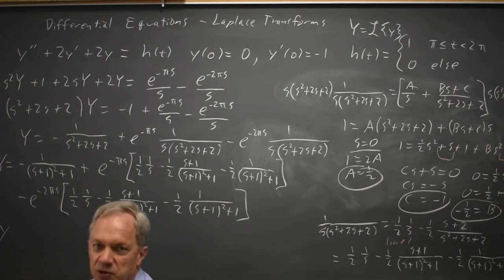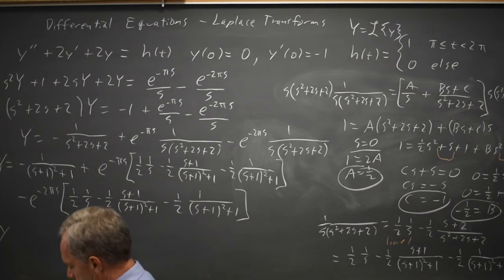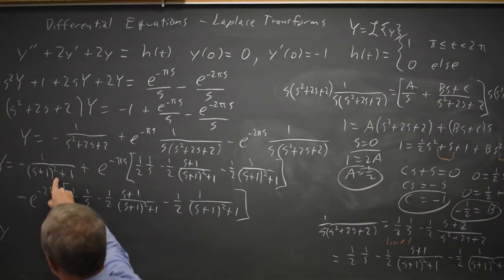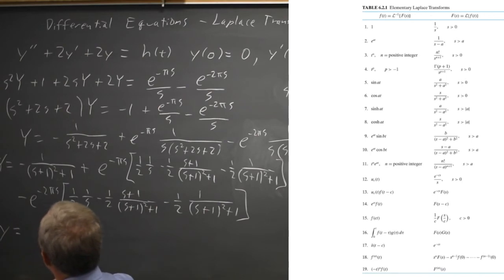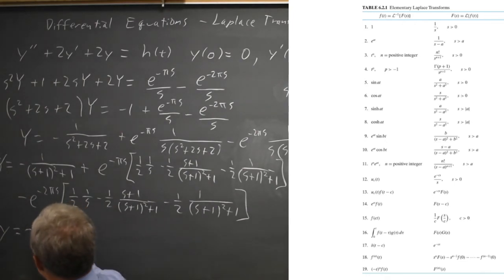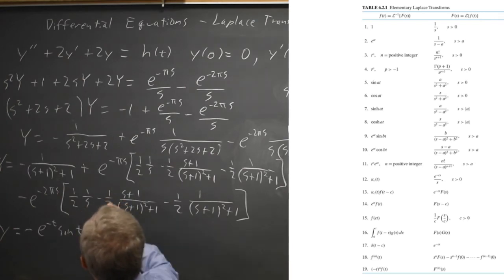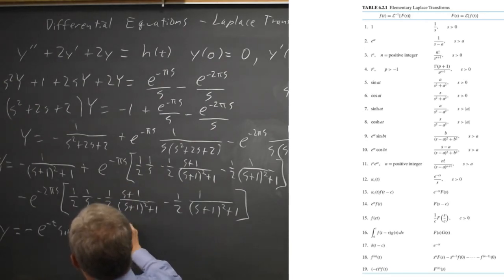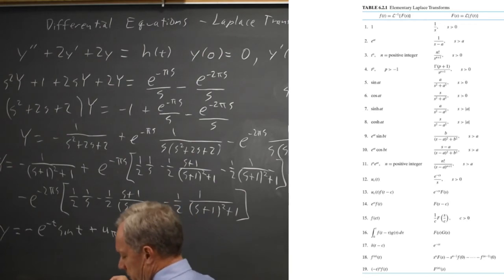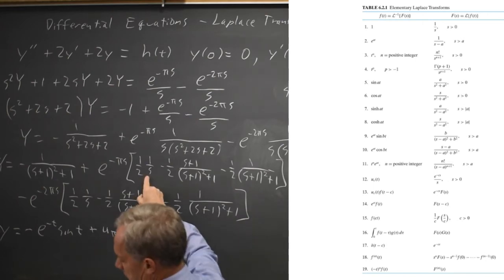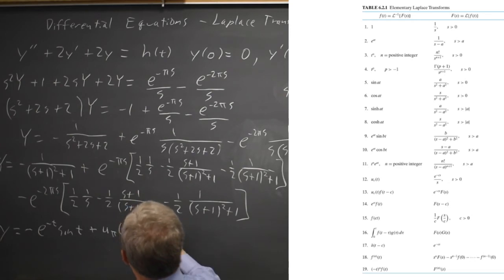Going to my table of Laplace transforms — you do want to work from the table as often as possible. This first term is line 9, so the inverse transform — my actual solution — is negative e to the negative t sine t. And then, from line 13, plus u_pi(t) — or you may write u(t minus pi) for the unit step function — times (1/2).